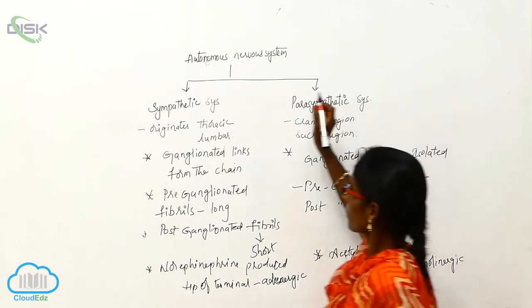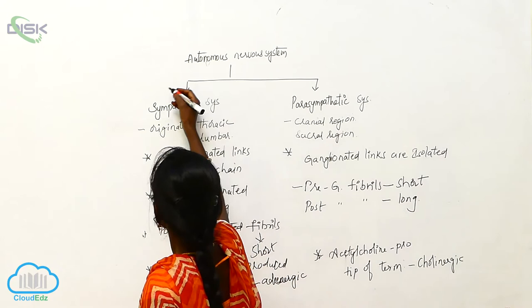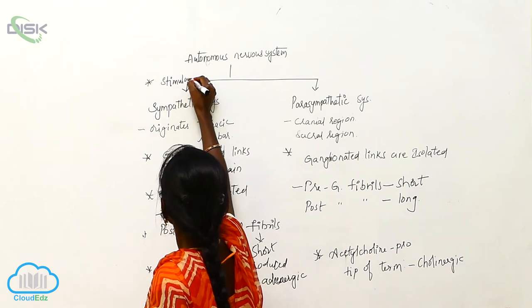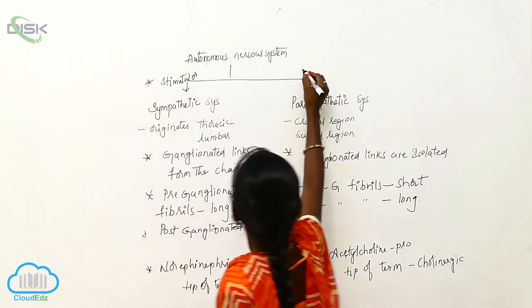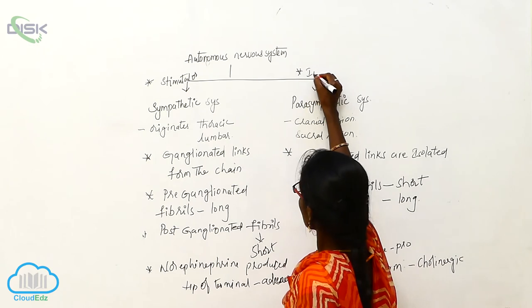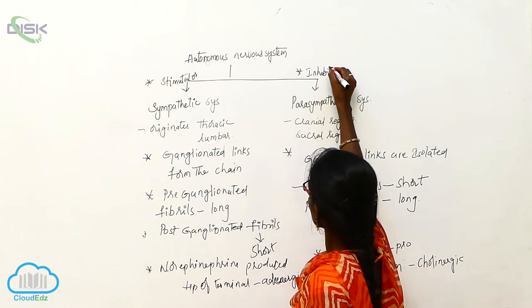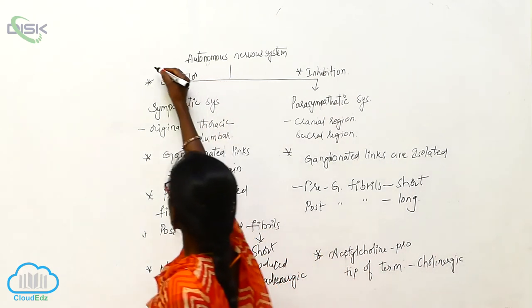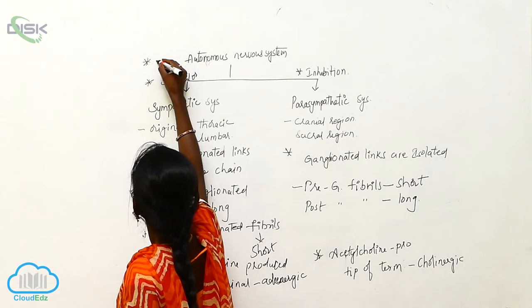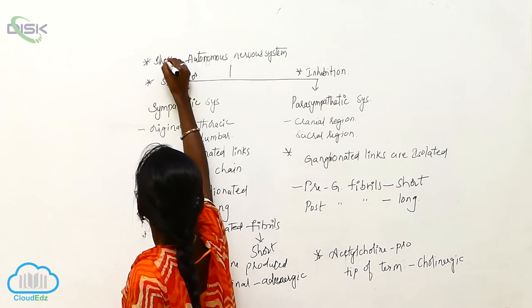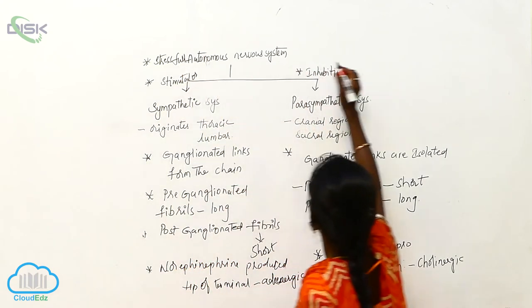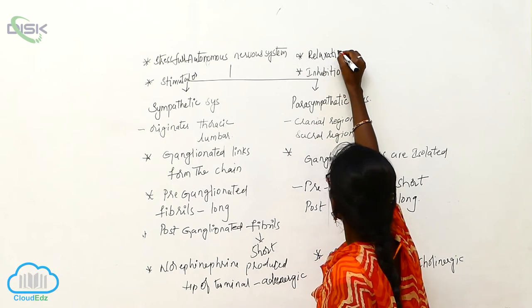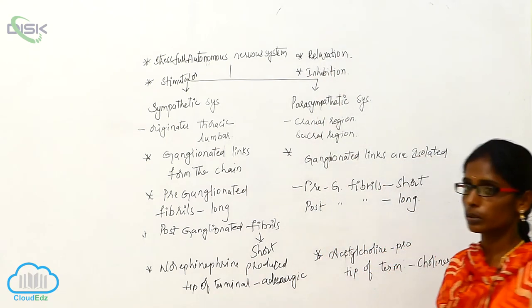The sympathetic system's overall effect is stimulatory, giving rise to a stressful response. The parasympathetic system's overall effect is inhibitory, giving rise to relaxation.